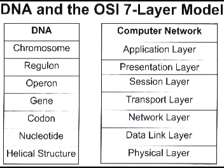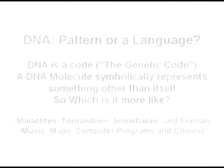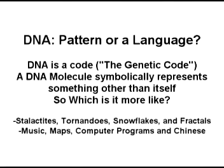It's arbitrary — you can't derive it from the laws of physics. You can derive a snowflake from the laws of physics, but you can't derive the genetic code from the laws of physics. So is DNA a pattern like stalactites, stalagmites, tornadoes, and hurricanes — or is it a code like English, Chinese, Visual Basic, or ASCII?